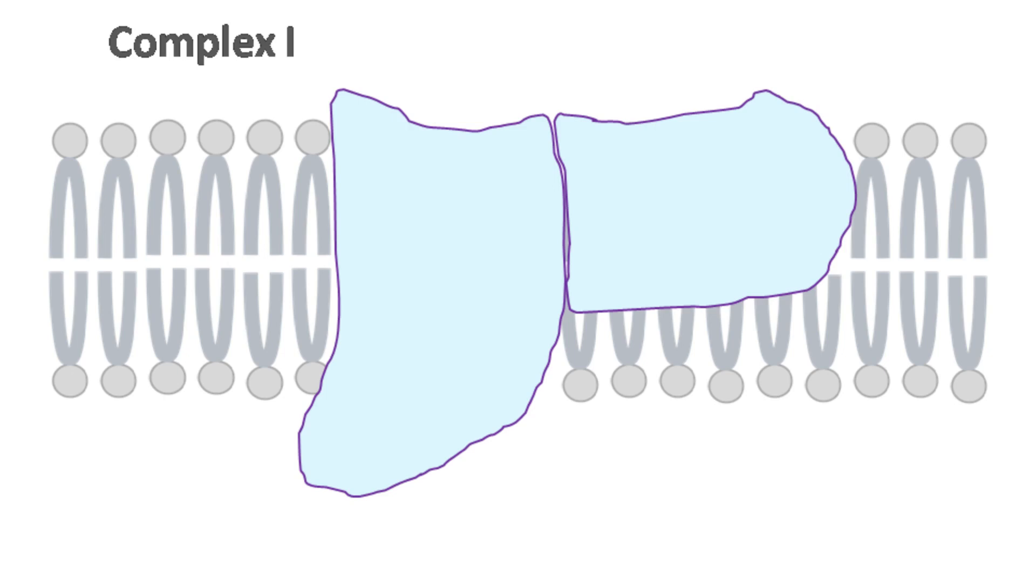This complex consists of FMN, iron sulfur center (Fe-S), iron sulfur protein N-2, and ubiquinone Q. Let's take a look at each of these components.